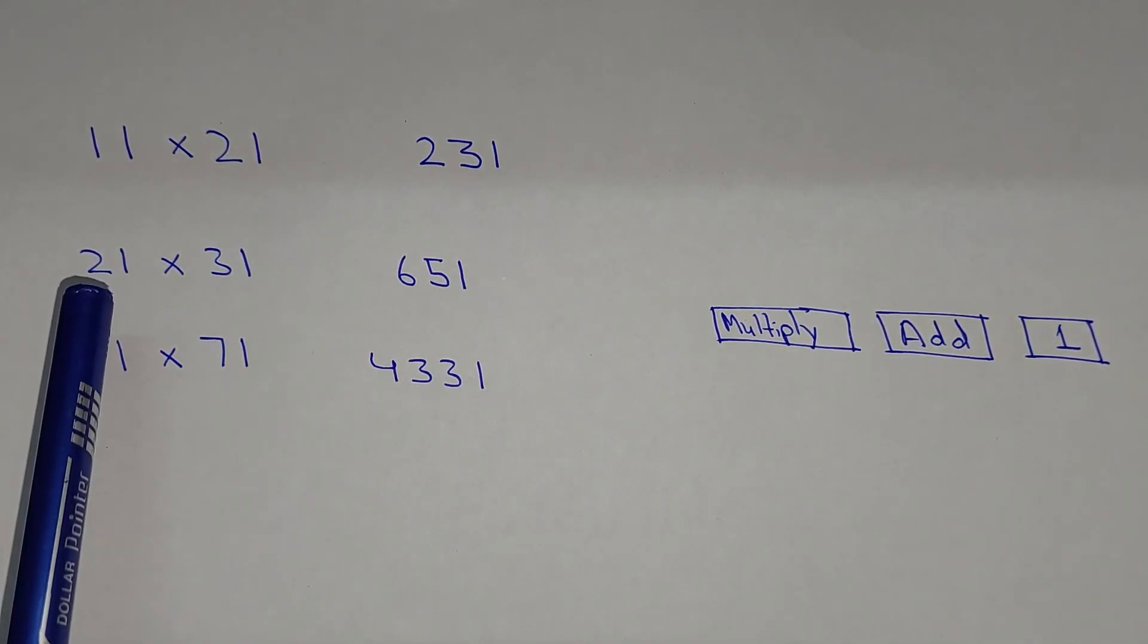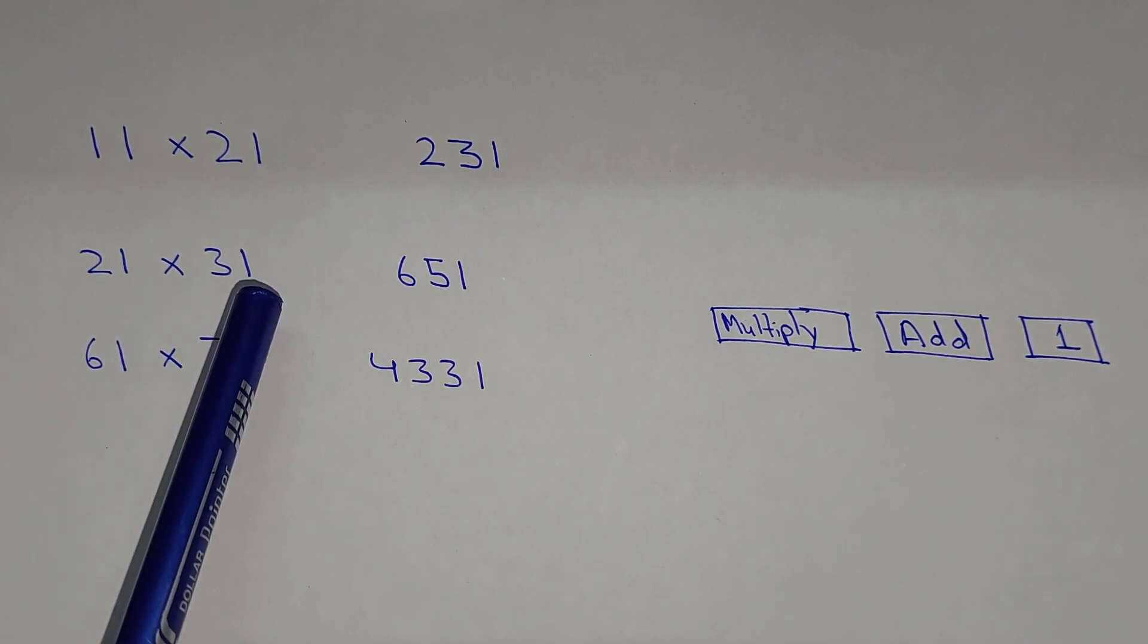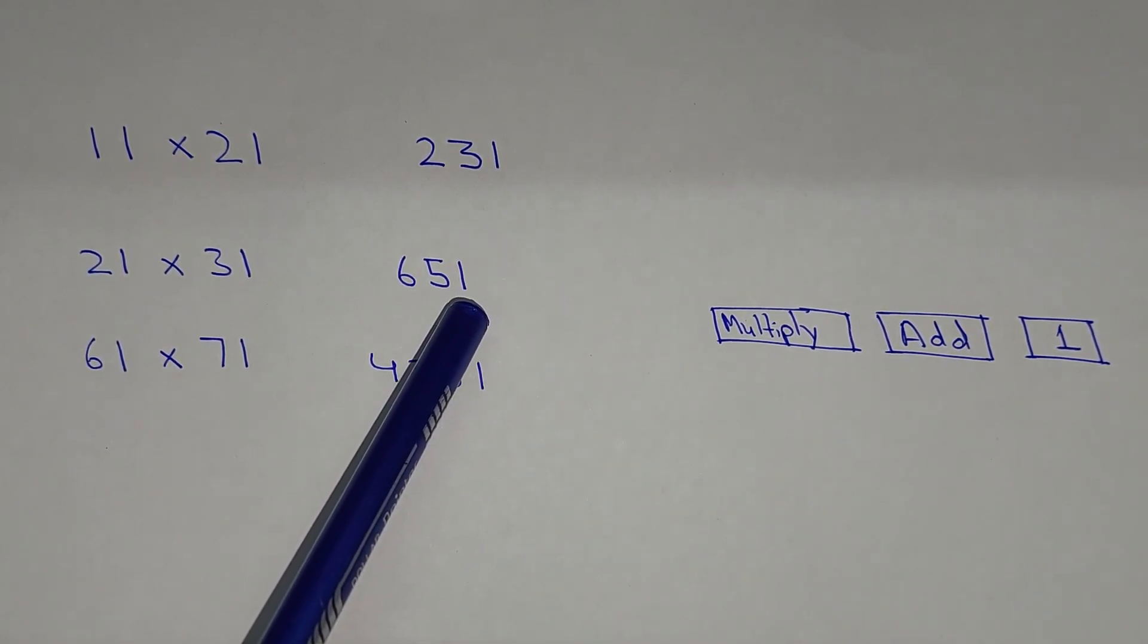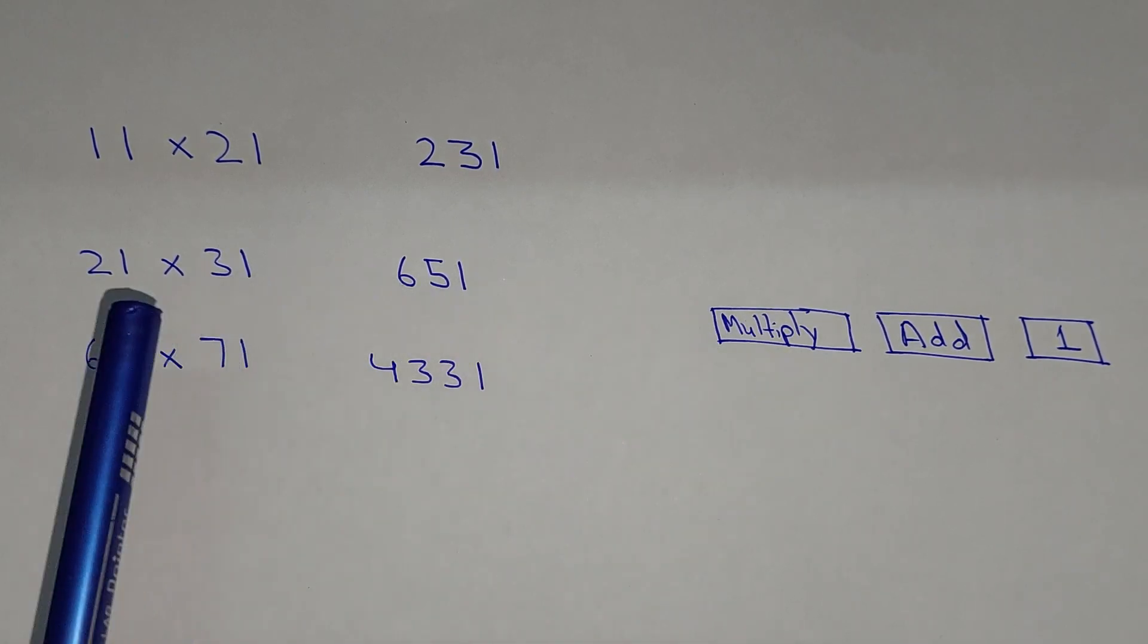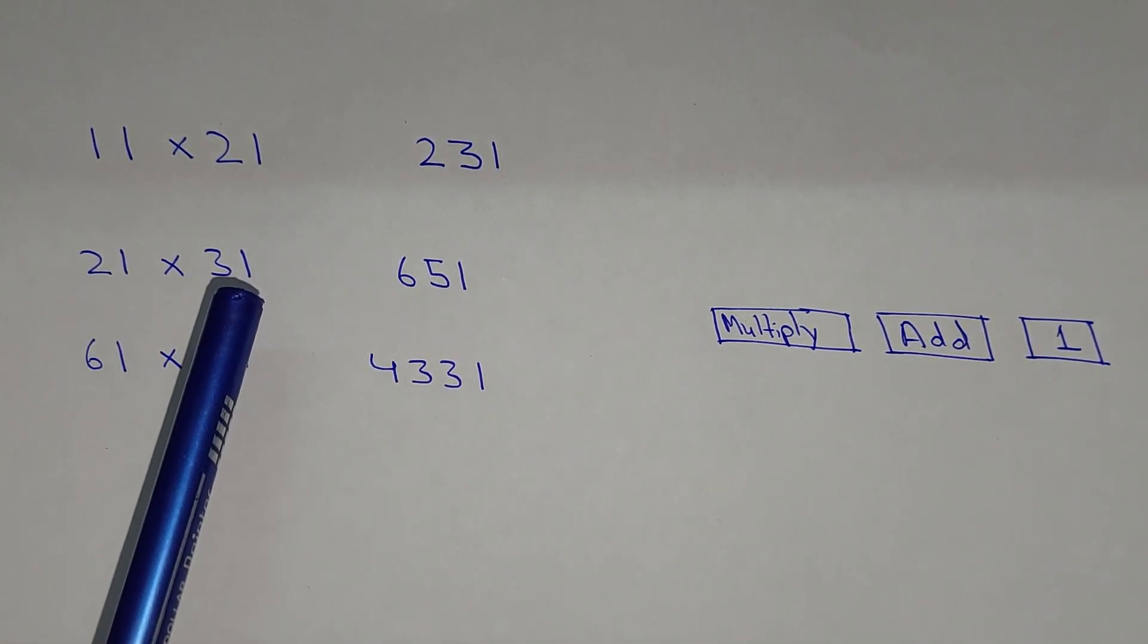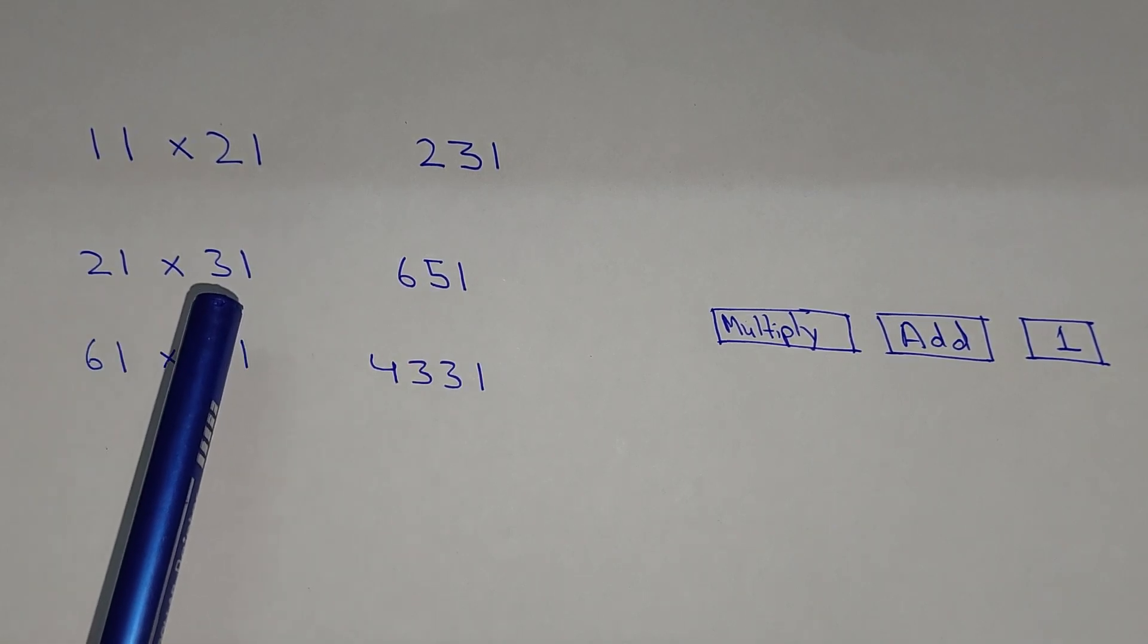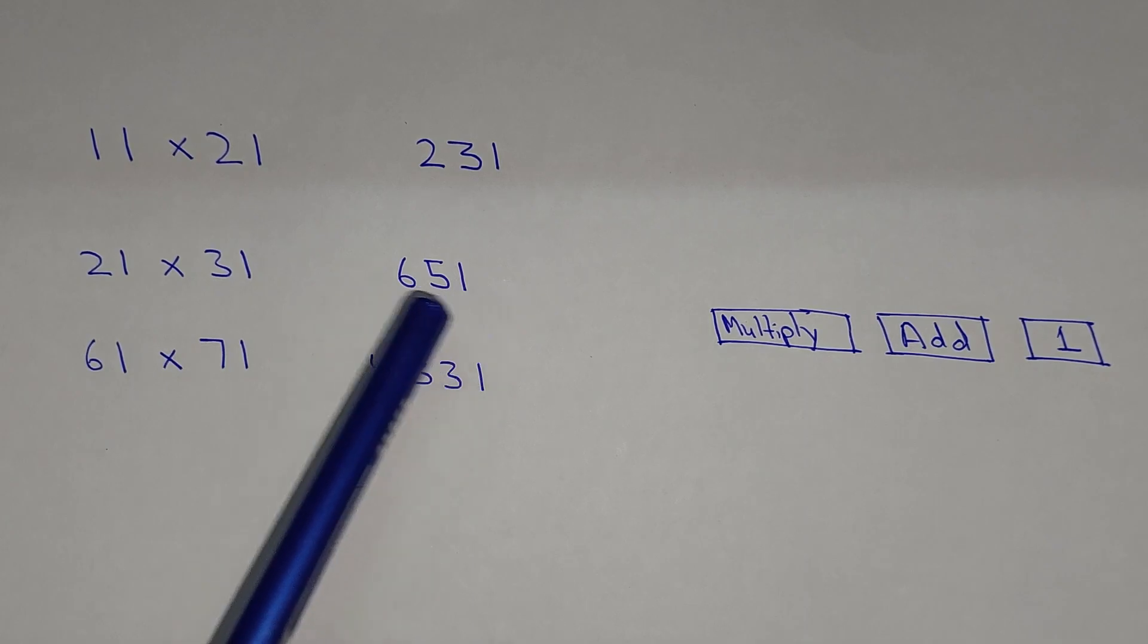Here we have 21 multiply by 31. So similarly we will follow this rule and we will write 1 over here. And in the second step we add the leading digits, so 2 plus 3, that will be 5. And in the third step we multiply the leading digits, 2 multiply by 3, that will be 6. So 651 is the answer.